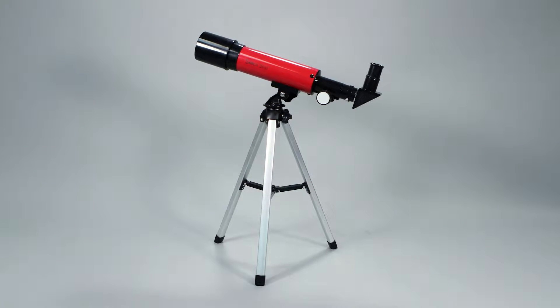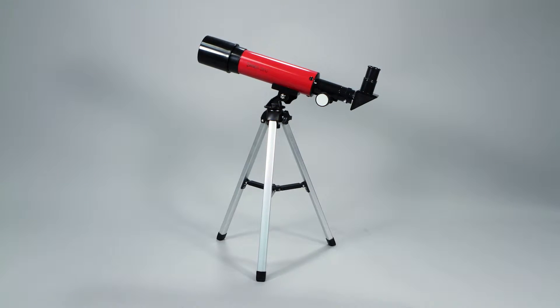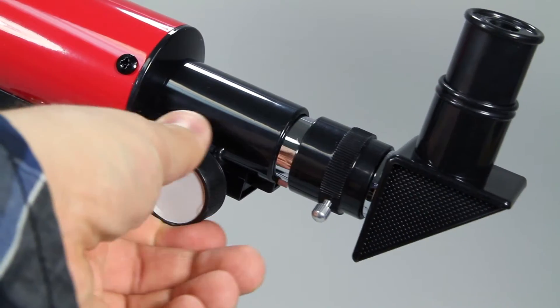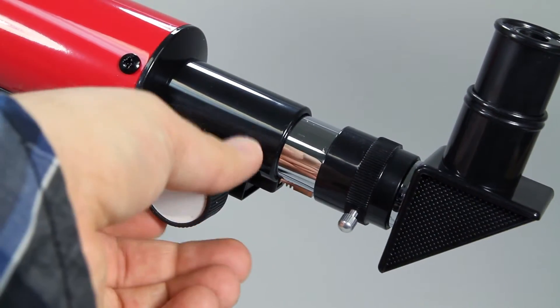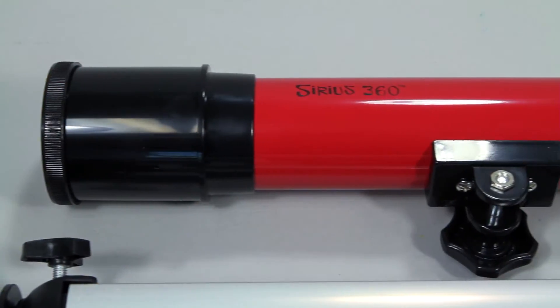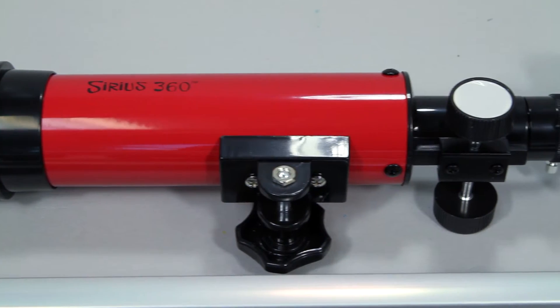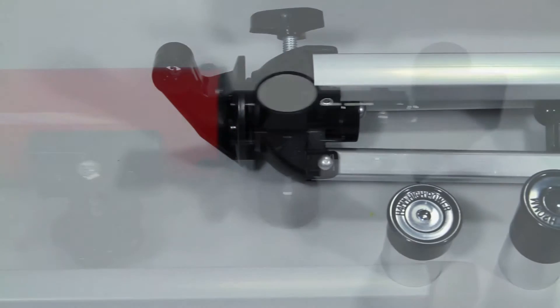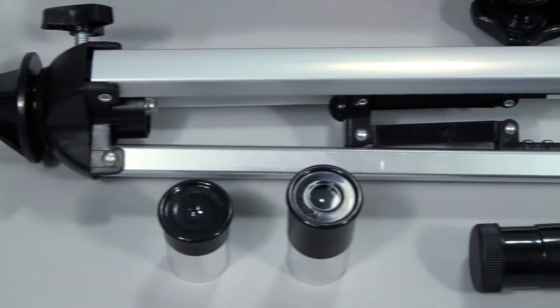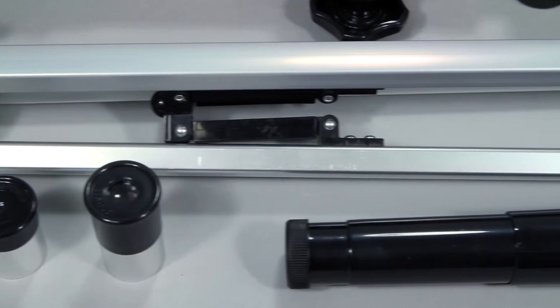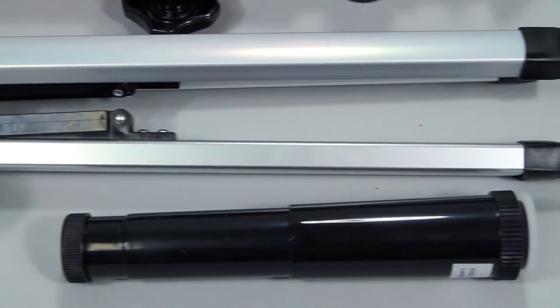The telescope comes equipped with a tripod for maximum stabilization and a focus knob to adjust focal distance. Inside the box you'll find the 90mm aluminum Sirius 360 telescope with a 360mm focal length, the 20mm and 4mm interchangeable eyepieces, a 2x erecting eyepiece, and the aluminum tripod.